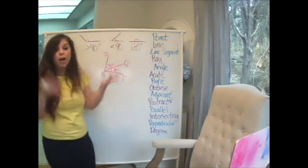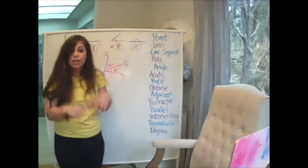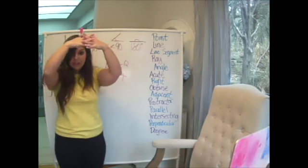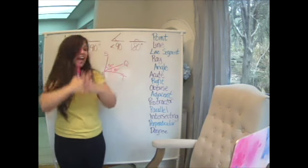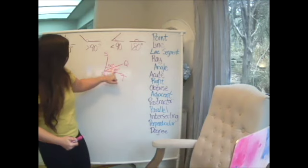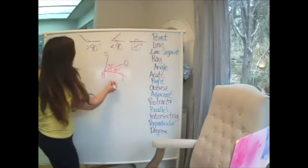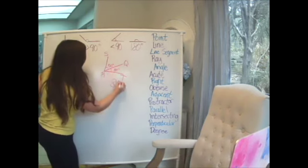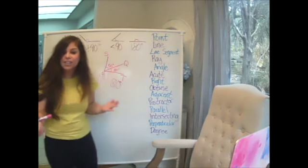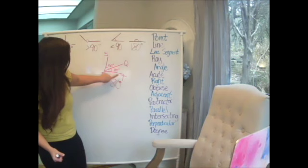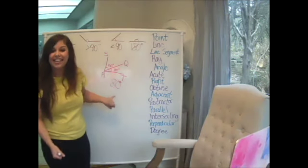So again, it's part, part, whole, but this time I know my two parts and I need to figure out my whole. So what am I going to do? I'm going to add them together. 50 plus 30 equals 80. So I know that the measurement of this S, R, T angle is 80 degrees.